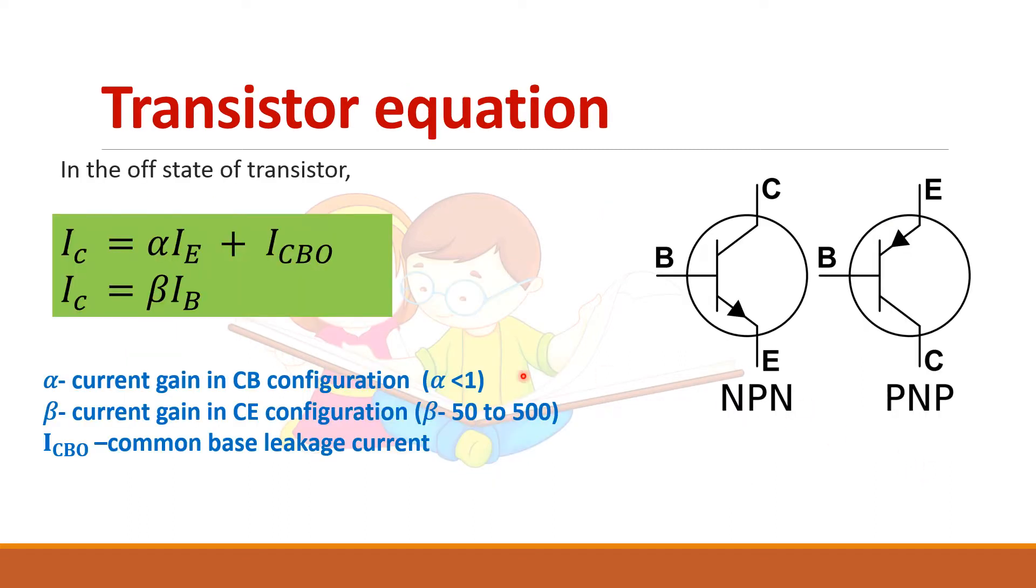So this is a basic transistor equation or basic things which you have learned in electronics. So this is a NPN transistor. So this is PNP transistor. So NPN. So this is N P region. So if we give a positive gate, so this will conduct.